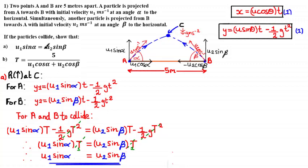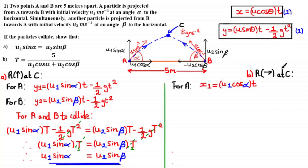Part B asks us to prove that t = 5 / (u₁ cos α + u₂ cos β). Inspecting the equation gives two clues pointing toward horizontal resolution: cos α and cos β are parts of horizontal velocity components, and the 5 is the horizontal displacement between A and B. So we resolve the motion of each particle horizontally at point C, taking rightwards as positive. Substituting u₁ cos α into Equation 1 gives the horizontal equation of motion for particle A: x₁ = u₁ cos α · t.